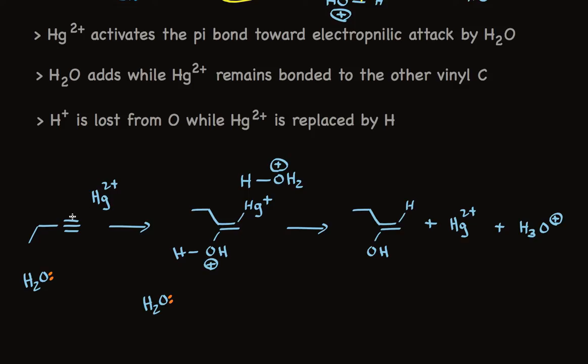We picture the pi electrons bonding with the mercuric ion, while a nucleophile, water, adds to the more substituted carbon. This forms an intermediate, with mercury bonded to one of the vinyl carbons and water added to the other. The oxygen is protonated and needs to lose a proton. Water can accept the proton, leaving the electrons with the hydroxyl group. And the electrons bonding to mercury can bond to a proton from the hydronium ion.